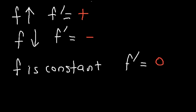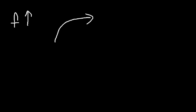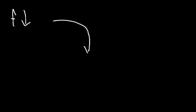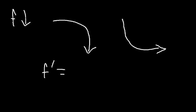The tangent line to the curve at that point is horizontal. Now there are two ways a function can increase in value: it can increase at a decreasing rate, or it can increase at an increasing rate. In both cases the first derivative is positive. Similarly, a function can decrease at an increasing rate or at a decreasing rate — in both cases the first derivative is negative.